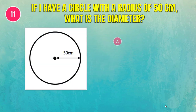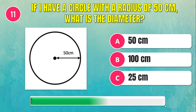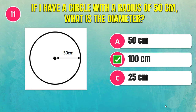If I have a circle with a radius of 50 cm, what is the diameter? The answer is 100 cm.